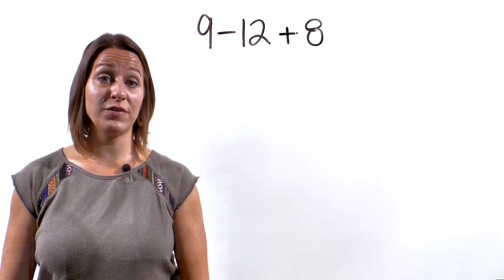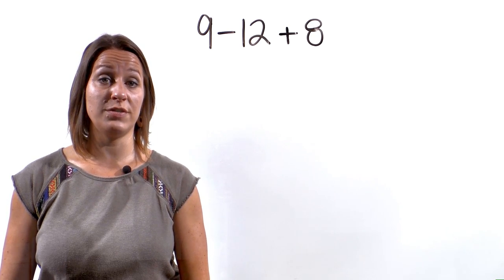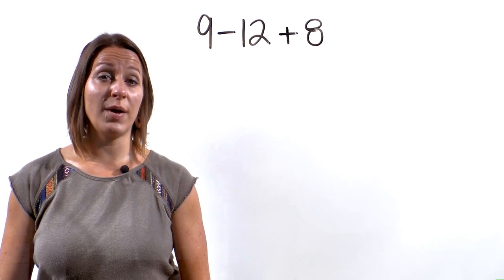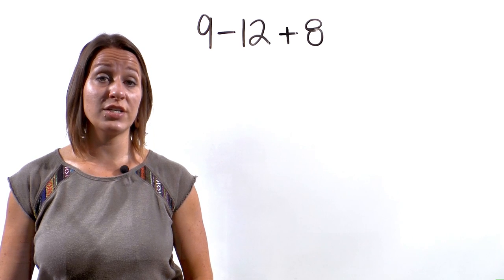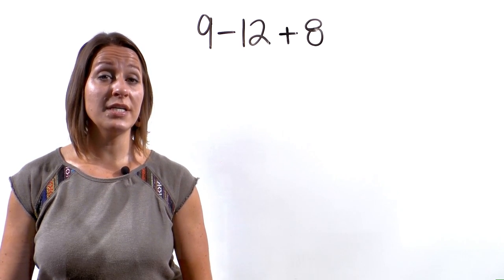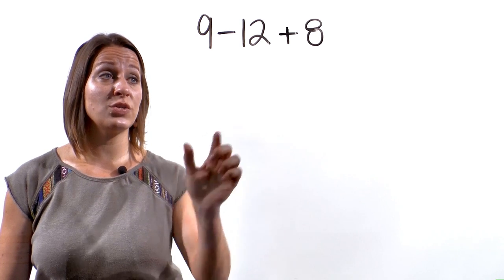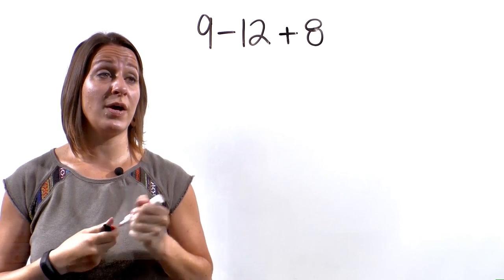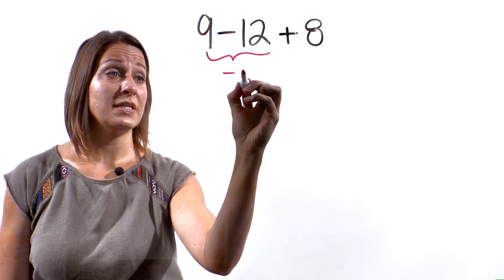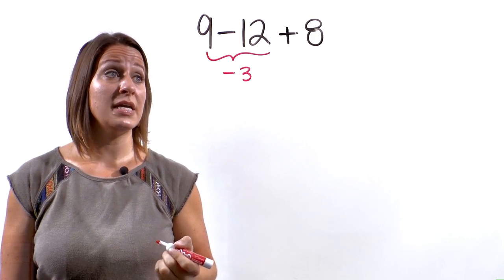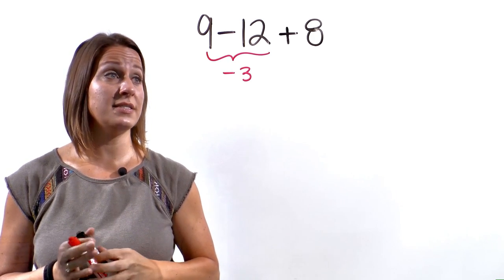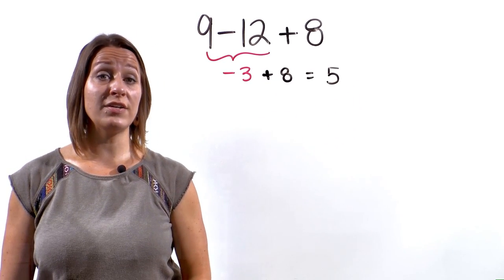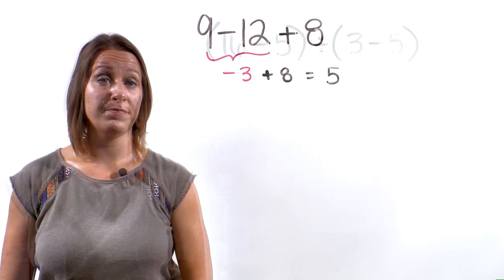Okay, we're ready to try our first example using the orders of operation. We have 9 minus 12 plus 8. The only two operations in this problem is the subtraction and addition. Now because those are the only two left, we're going to actually work this problem left to right. So 9 minus 12 is a negative 3. Negative 3 plus 8 is a 5. So the final answer to this problem is positive 5.